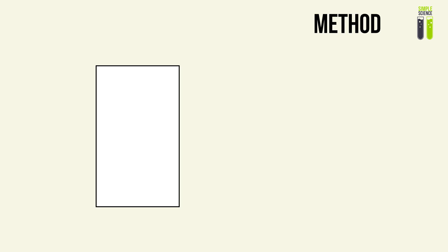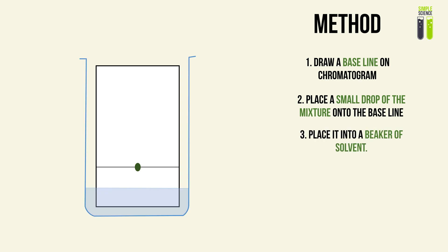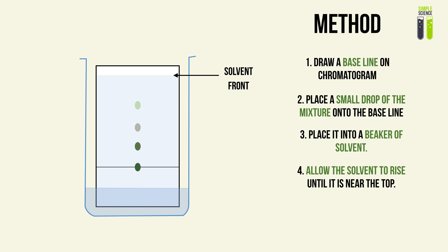Let's look at how the method of chromatography works. First, we draw a baseline on the chromatogram — a reference point from which we can measure certain distances. Next, we place a small drop of our mixture onto the baseline, then place the chromatogram into a beaker of solvent. We usually close the lid to prevent the solvent from escaping, and then we allow the solvent to rise. As it rises, different substances also rise due to their differing solubility and attraction to the paper.